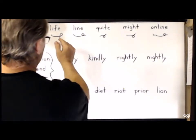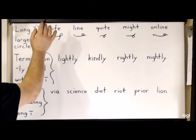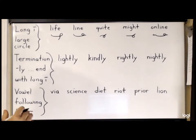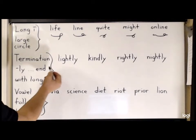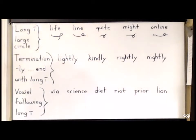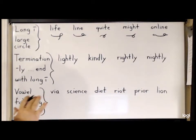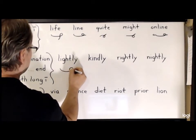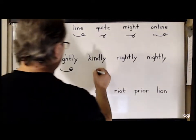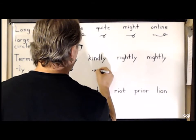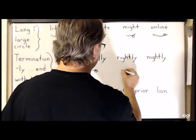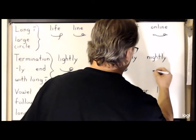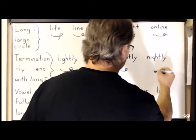Again, this large circle would normally be an A, but in these words it represents the long I. The termination L-Y in word forms that end with the long I — like 'light', 'kind', 'right', and 'night', which are all short forms — will be a circle within a circle. So for instance, 'lightly' will be L-I and then the circle in the middle. For 'kindly', K-I and then a small circle within a large circle. For 'rightly', starting with R, the long I, and that circle within the circle. And same for 'nightly', N-I, representing the L-Y.